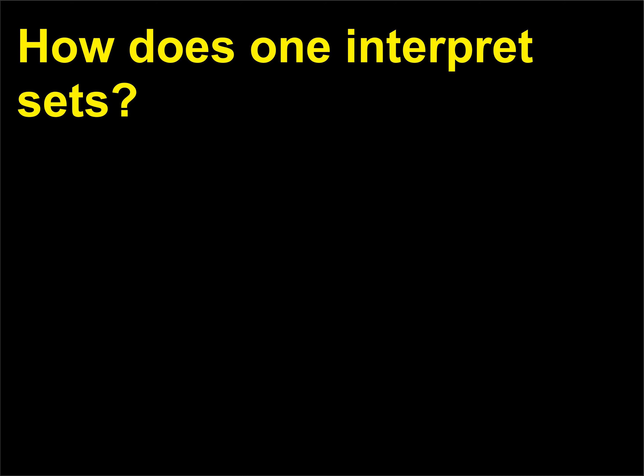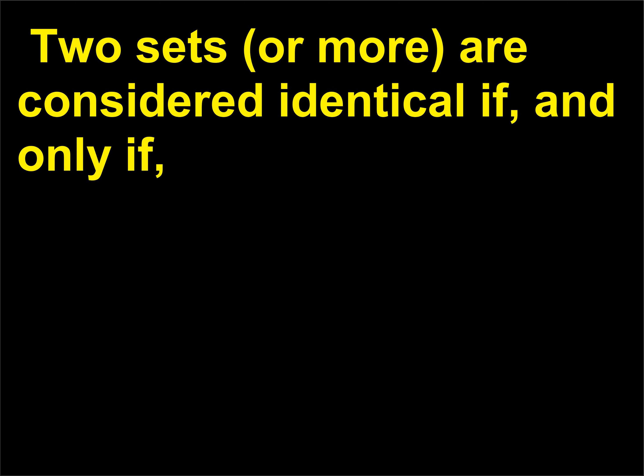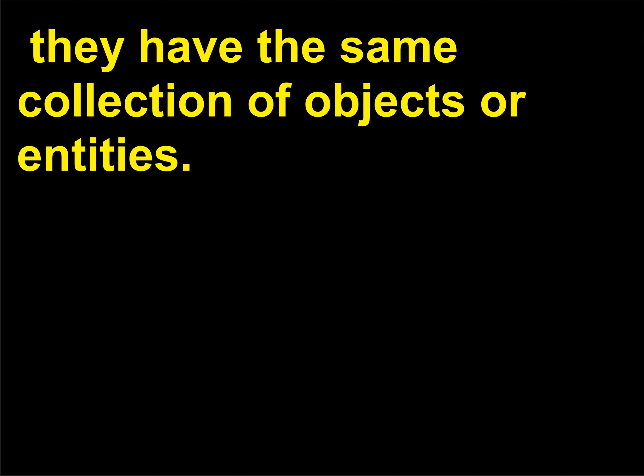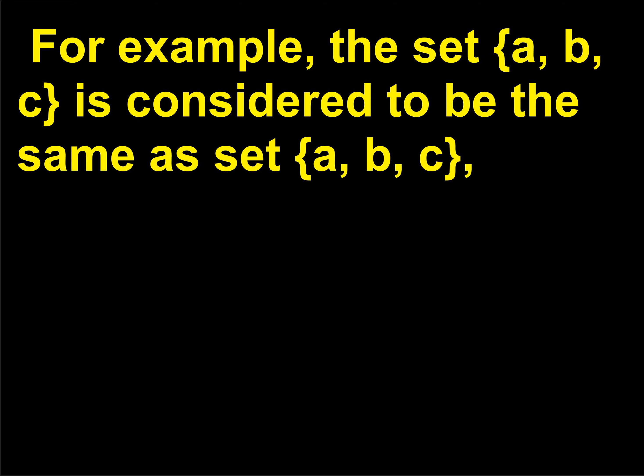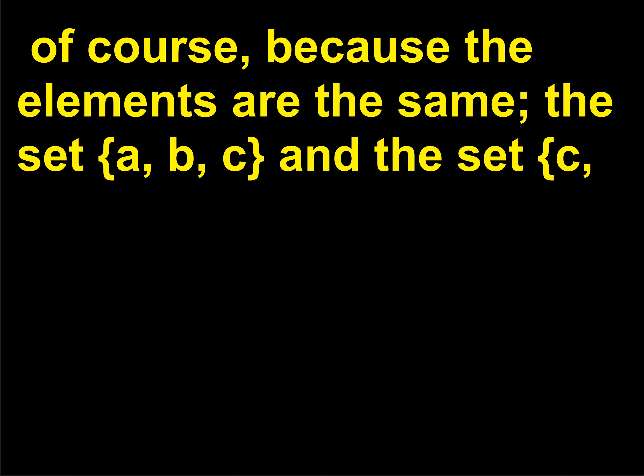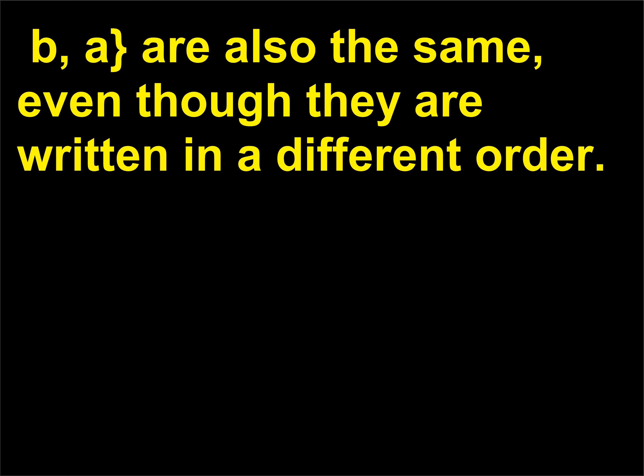How does one interpret sets? There are several ways to look at sets. Two sets or more are considered identical if, and only if, they have the same collection of objects or entities — a principle known as extensionality. For example, the set {A, B, C} is considered to be the same as set {A, B, C}. Because the elements are the same, the set {A, B, C} and the set {C, B, A} are also the same, even though they are written in a different order.